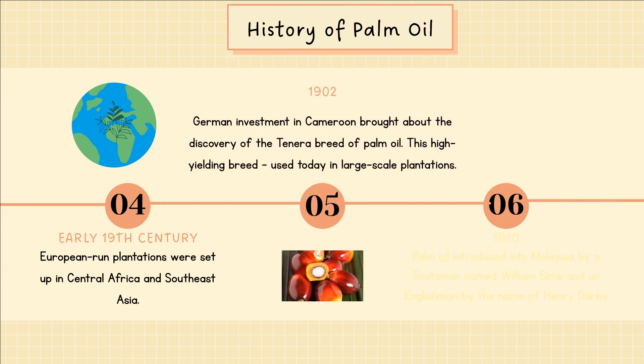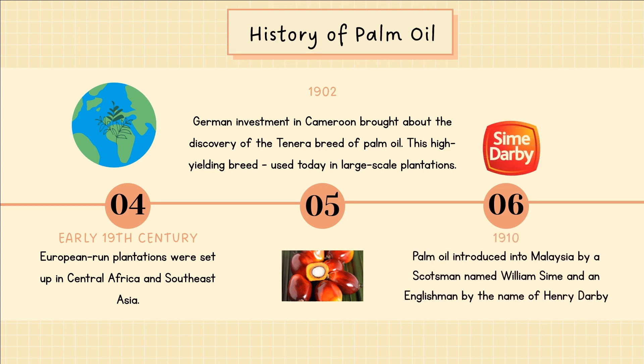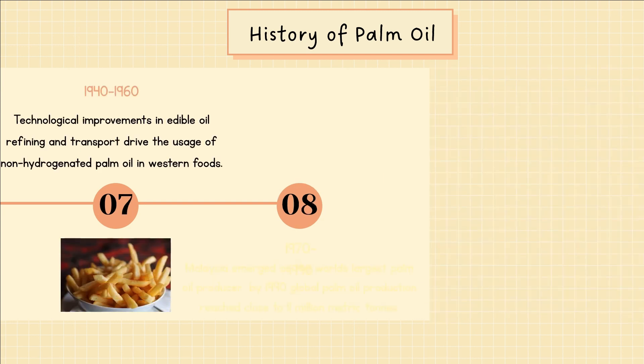While in 1902, German investment in Cameroon brought about the discovery of the Tenera breed of palm oil. This high-yielding breed is used today in large-scale plantations. In 1910, palm oil was introduced into Malaysia by a Scotsman named William Syme and an Englishman named Henry Darby. Did you know that Syme Darby Plantation is taken from the names of these two people? Next in 1940–1960, technological improvements in edible oil refining and transport drove the usage of non-hydrogenated palm oil in Western foods.